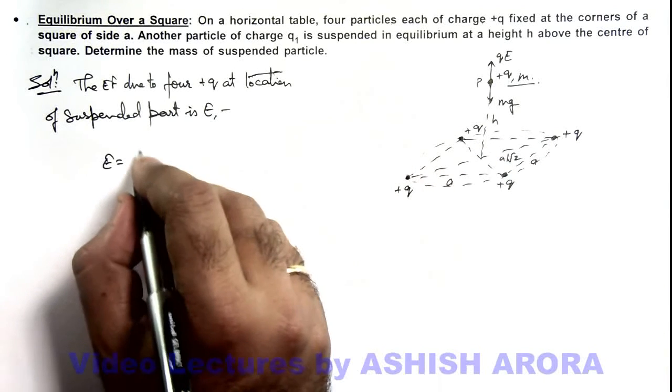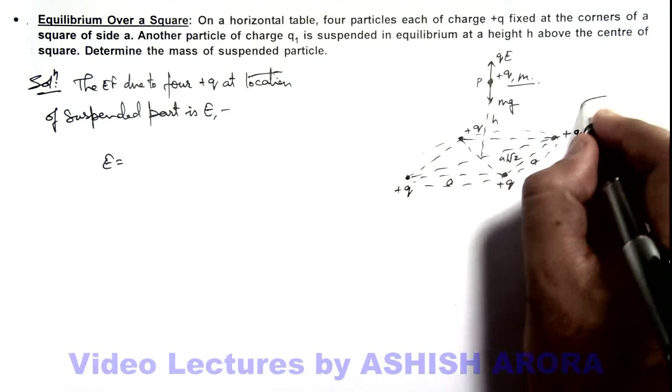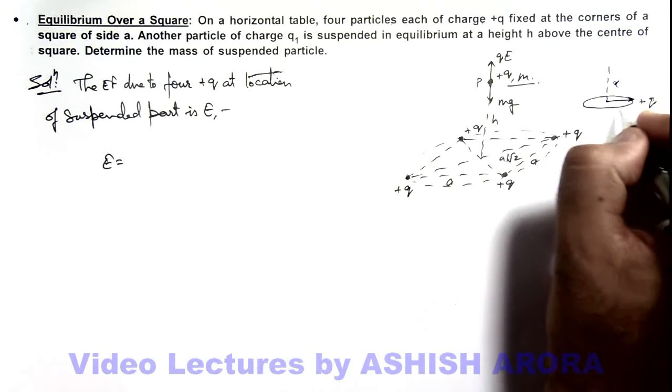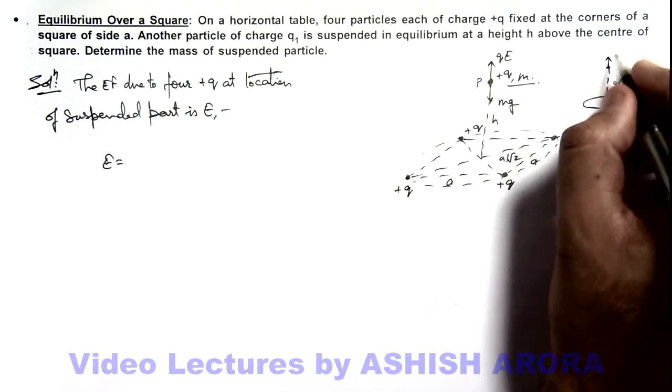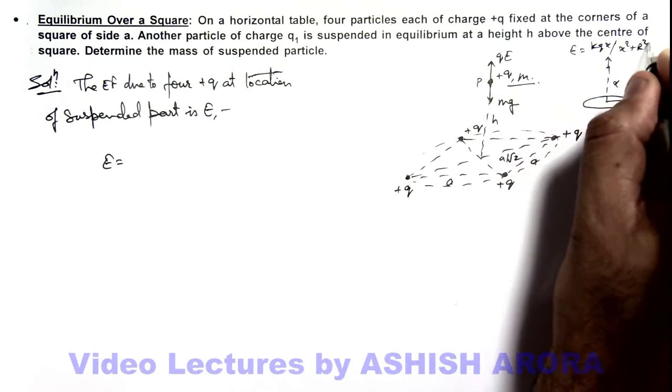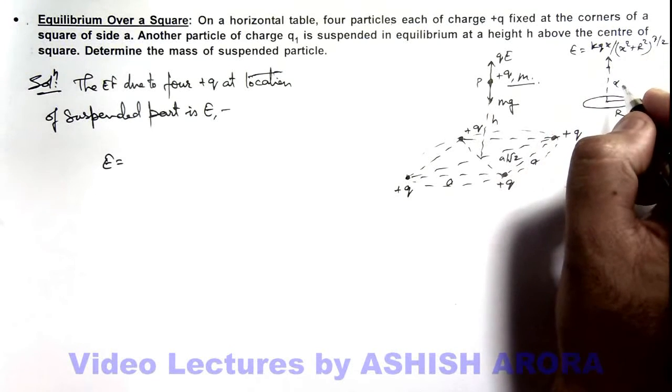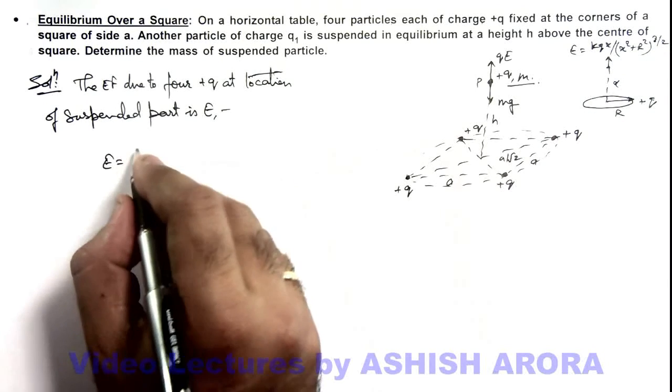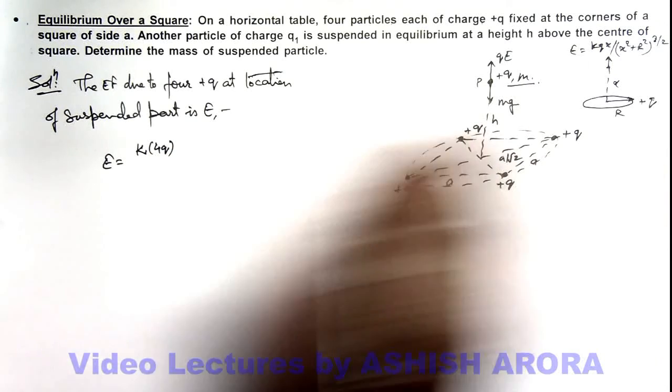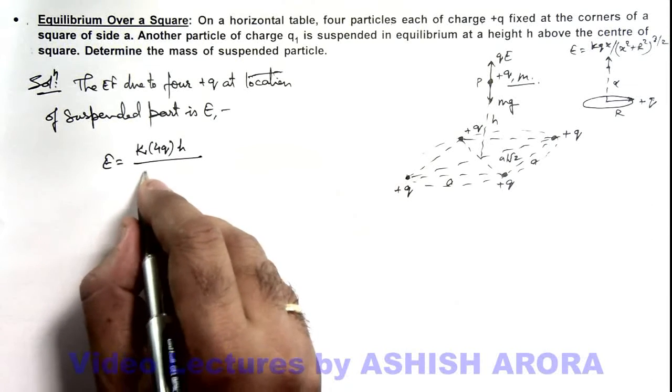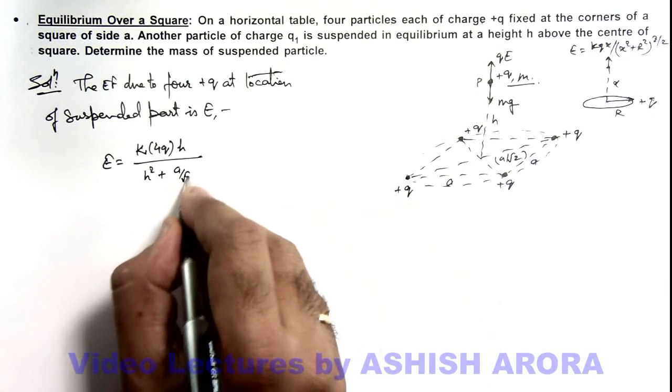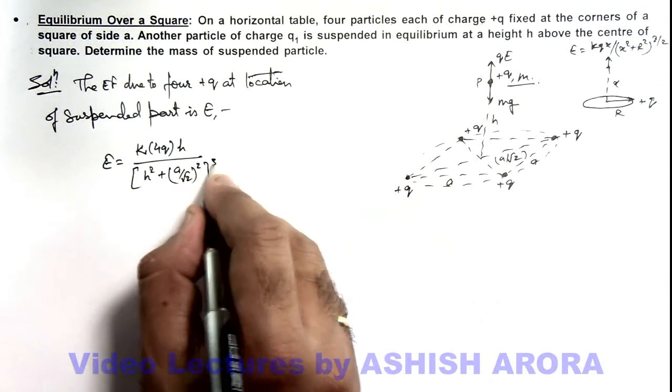So this can be given by the relation which we've studied that if there is a ring having a charge plus q, then at a distance x from the ring of radius r, the electric field is given by E equals k q x upon x square plus r square to power 3 by 2. This we have studied. So the same result we can use here, but here we use k total charge on it is 4q. Instead of x we take h divided by h square plus radius of ring we can take as a by root 2, so this is a by root 2 whole square to power 3 by 2.